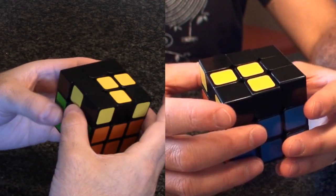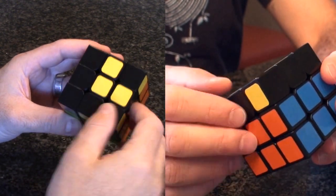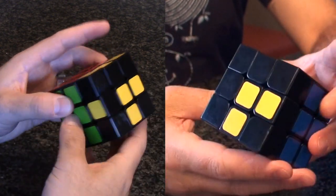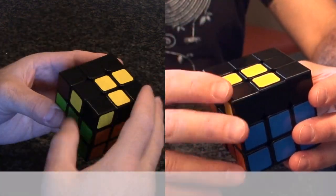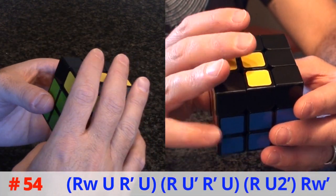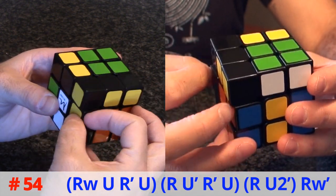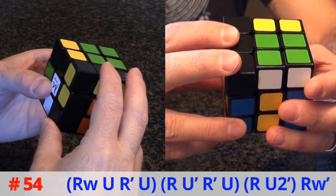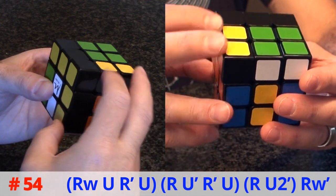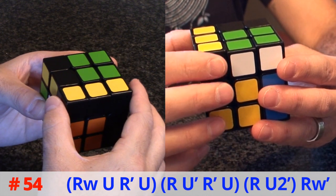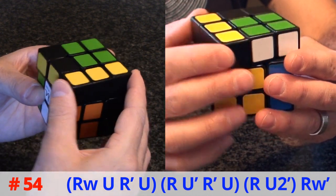I'm going to start with 54 which is the easier one. That's bar on the left, L on the top. And the algorithm for this is right wide U R prime U R U prime R prime U R. And here you could do U2 or U2 prime. I do U2 prime for hand placement.